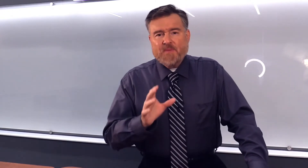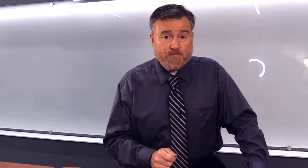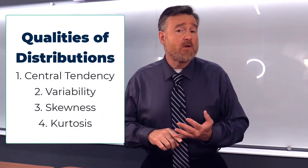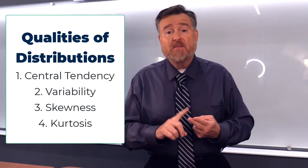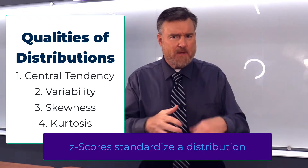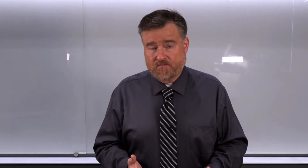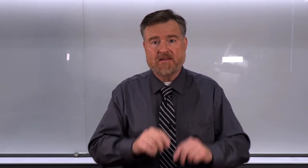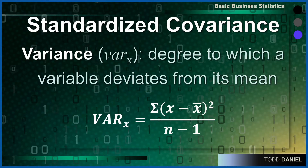Now let me switch tactics and remind you of some things we've already learned. When we discussed distributions, I said there were four important questions: central tendency, variability, and later z-scores or standardization. Anytime we have a variable, we add up the numbers and divide by n to get a measure of central tendency. To measure variability, we take each raw score and subtract the mean to get a deviation score. We can't add up deviation scores because they sum to zero, so we square them, add up the squared deviations for the sum of squares, then divide by n for the variance — the degree to which a variable deviates from its mean.